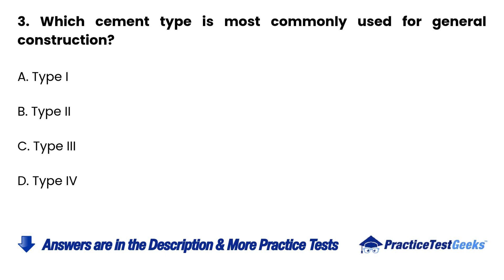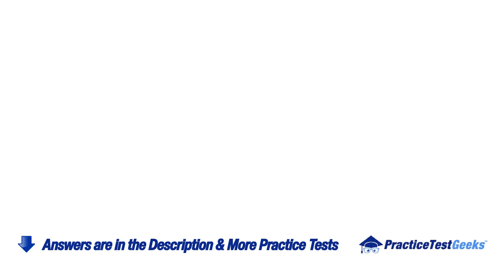Question 3. Which cement type is most commonly used for general construction? A. Type 1. B. Type 2. C. Type 3. D. Type 4.